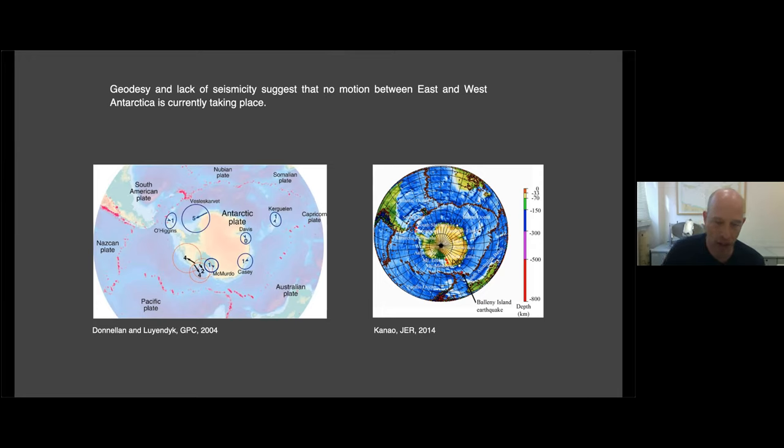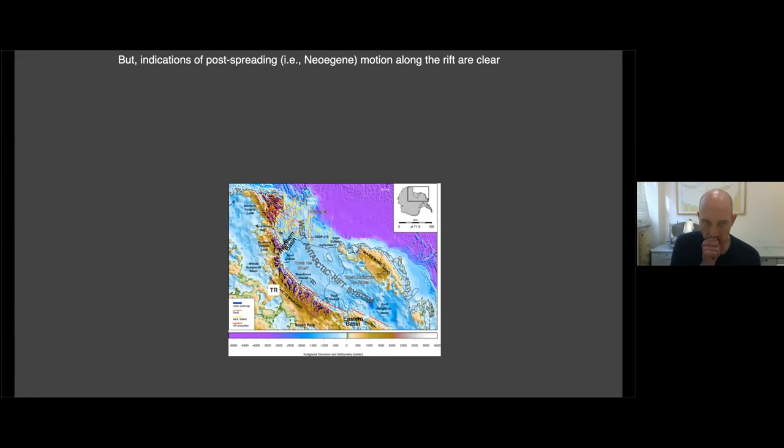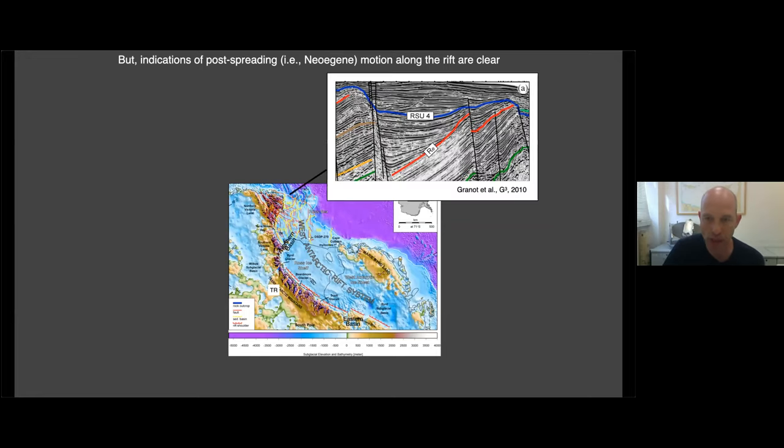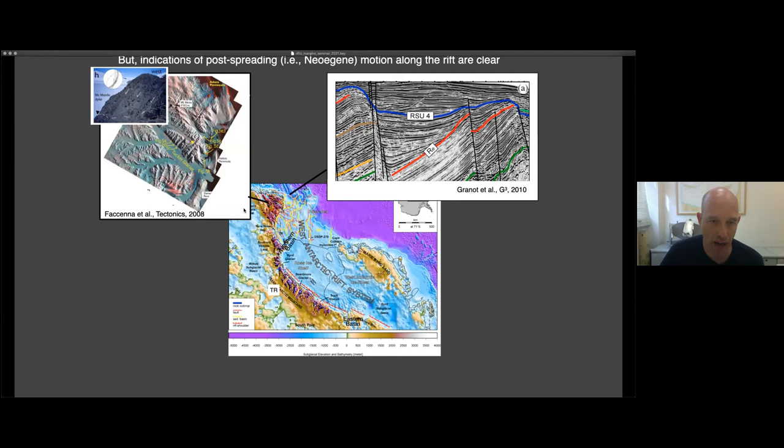And the question is then whether there was any motion after the seafloor spreading ceased in the Adare Basin. There are indications for younger extensional motions within the rift system. For instance, you can see in the seismic profile how the sediments on top of the oceanic crust in the Adare Basin are being faulted and extended by normal faults. There are also other online indications of normal faulting that offset young volcanic dikes. So we know these faults must have been active during the Miocene time.